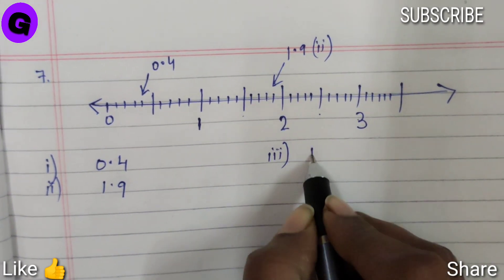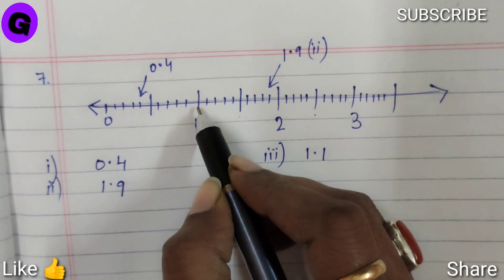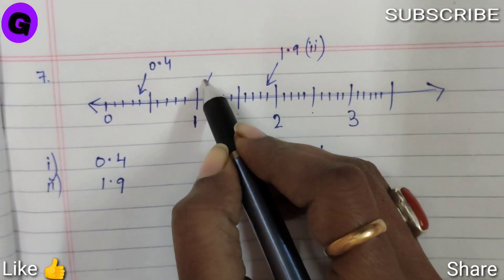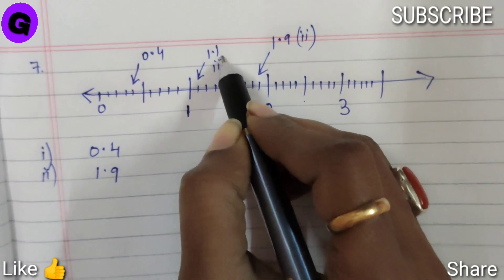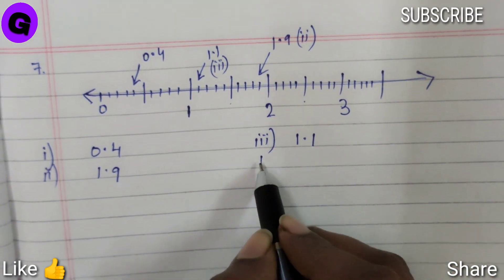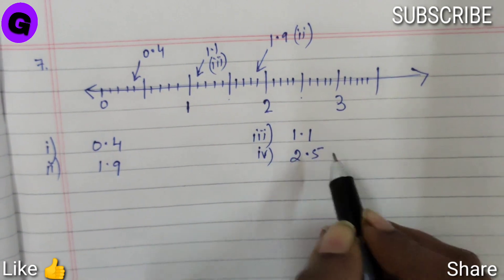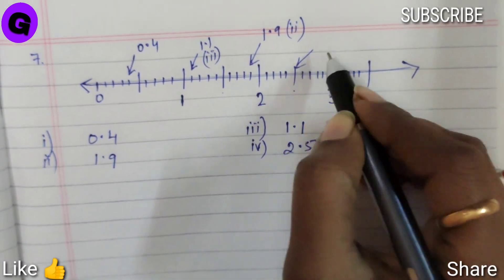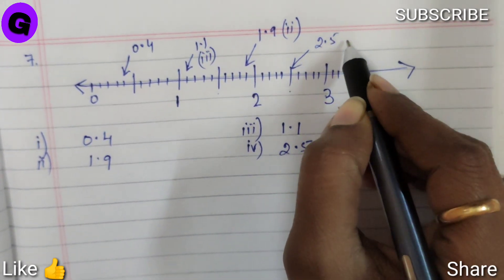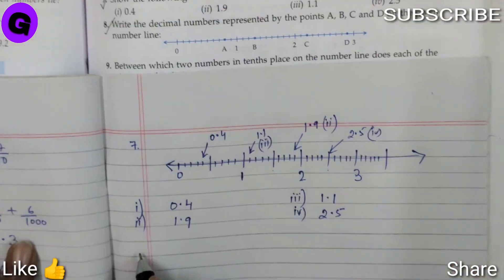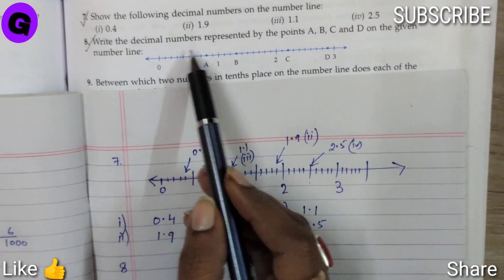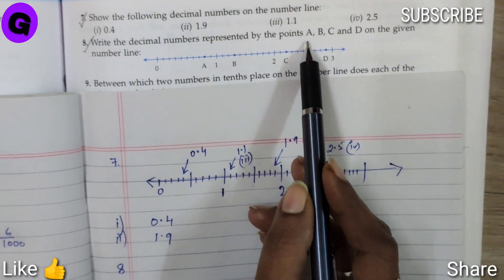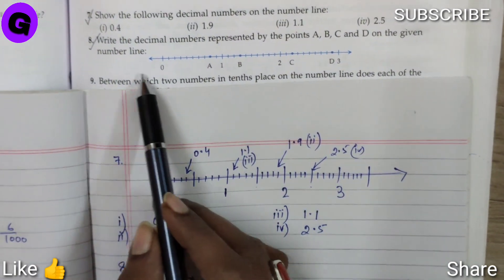Number 3, it is 1.1, so 1.1, this is 1.1. Number 4, 2.5, 2.5, this is 2.5. Question number 8, it says write a decimal number represented by the points A, B, C, and D on the given number line.